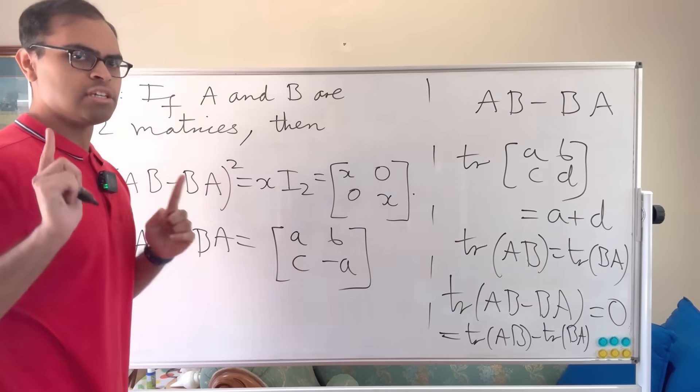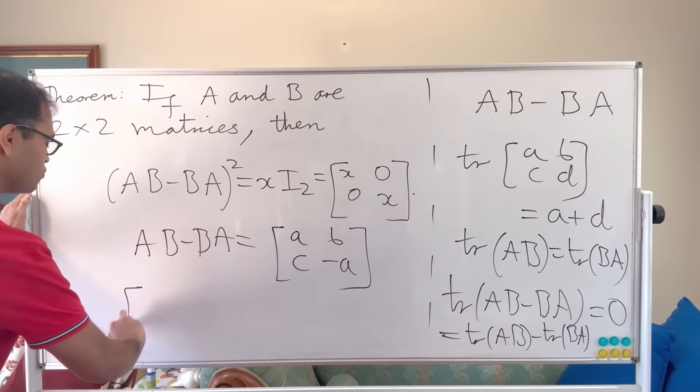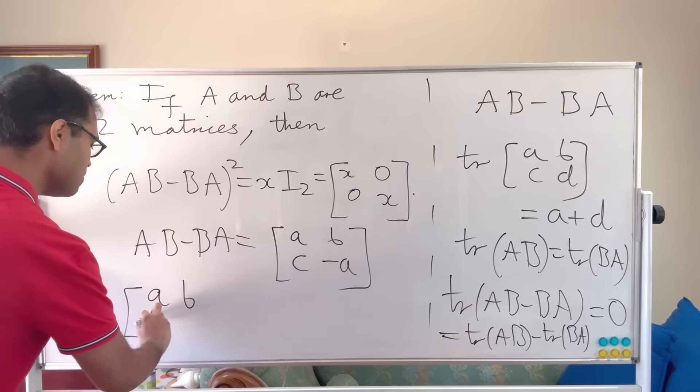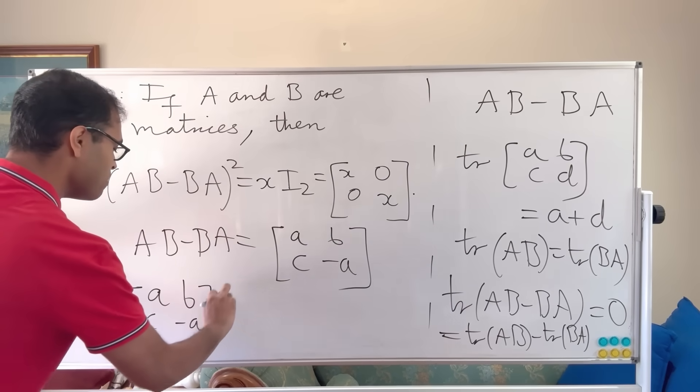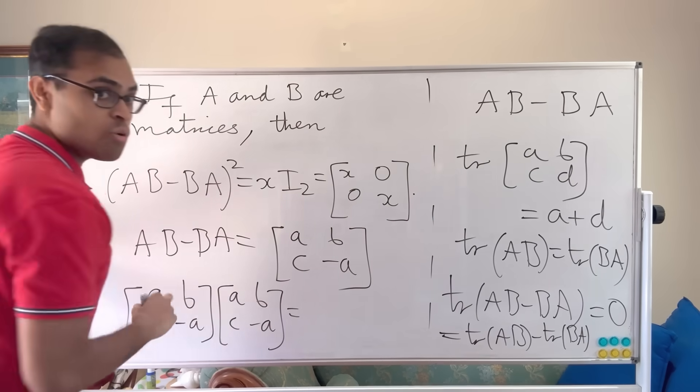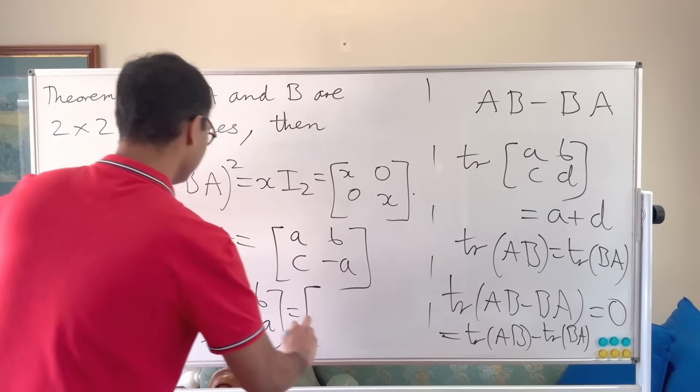And now let's square this matrix. And this is going to be a lot easier because we only have three variables, not eight variables, not a huge mess. We can just take a, b, c, minus a and multiply it with itself: a, b, c, minus a. And look what's going to happen. This is going to be mind-blowing.